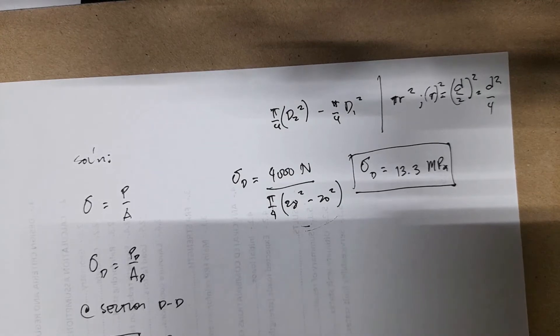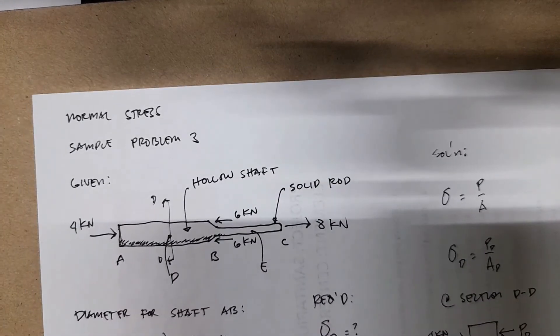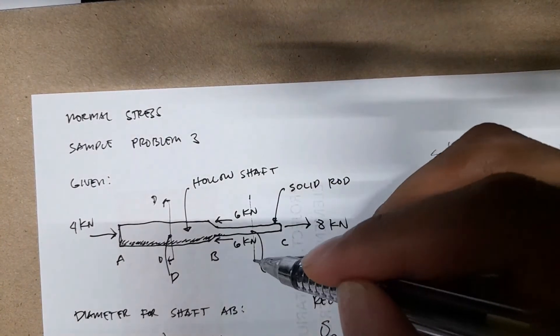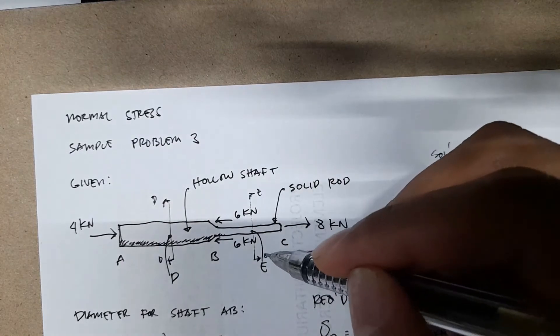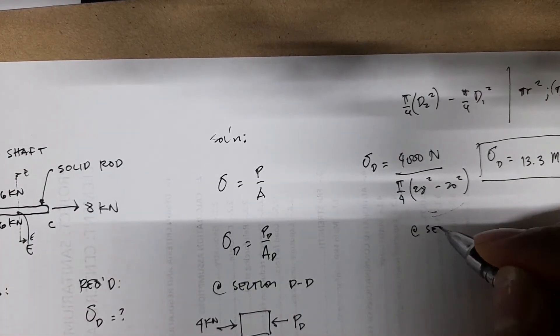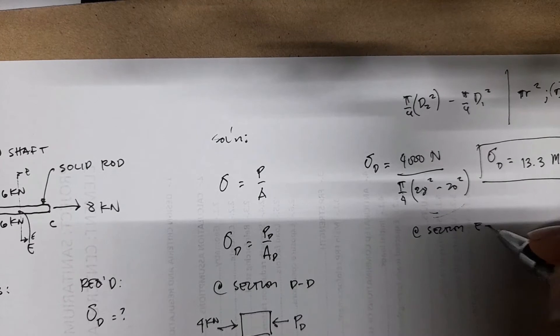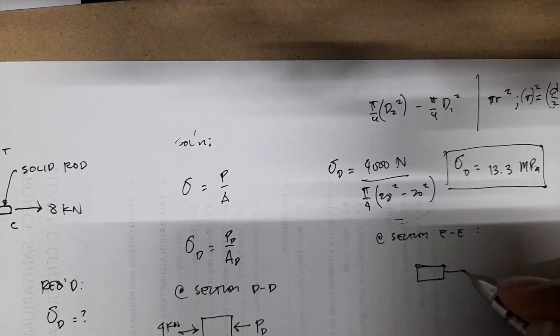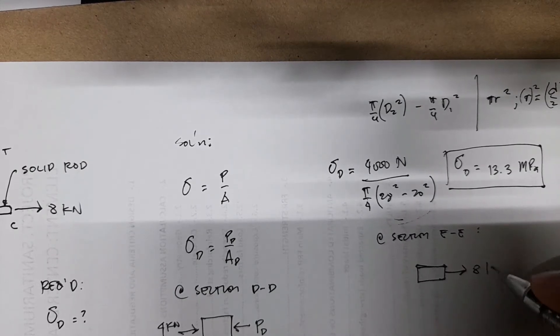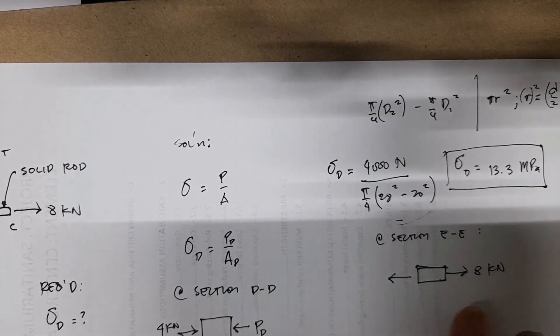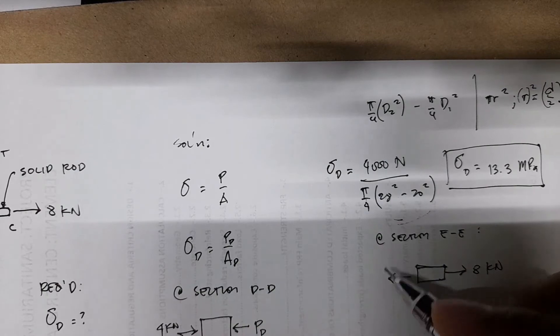For stress at E, you have to cut section. So again, to make this simpler, we cut at this section, we'll call this E-E. So when we consider the right side of the section, at section E-E we have this one, tensile force of 8 kN. And then of course, the internal force is also directed in the opposite direction. We have the PE.